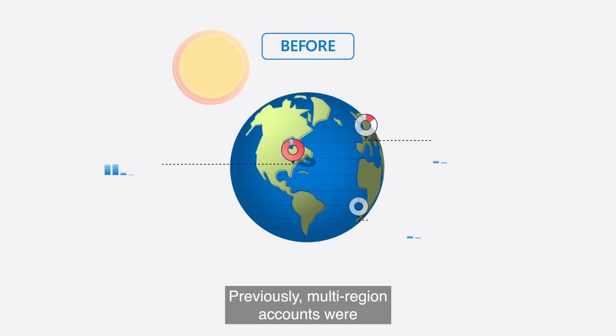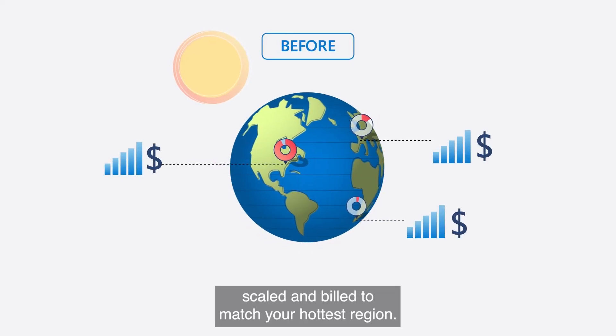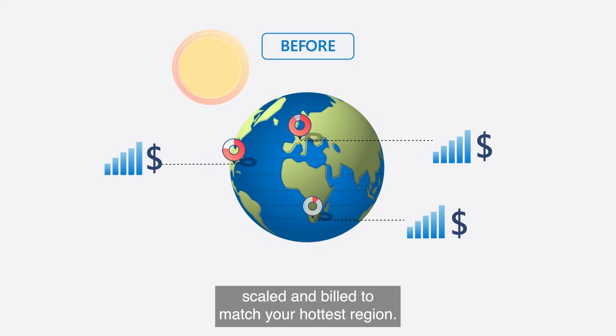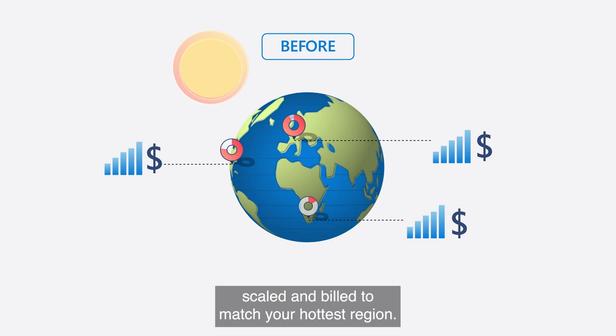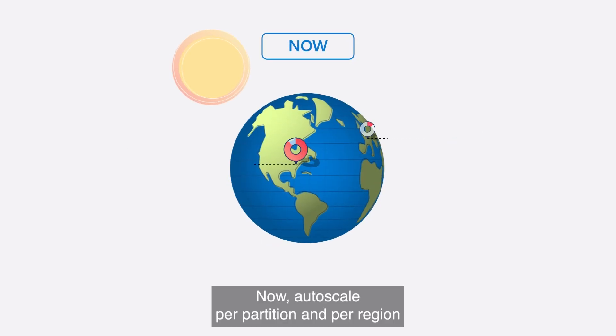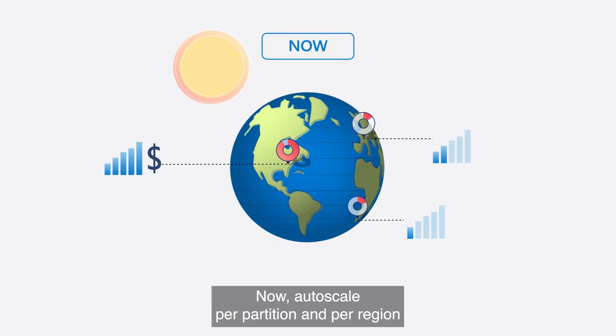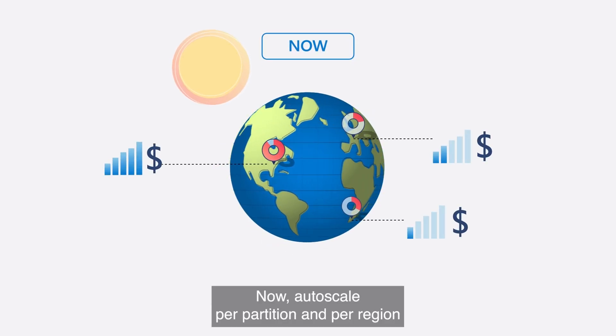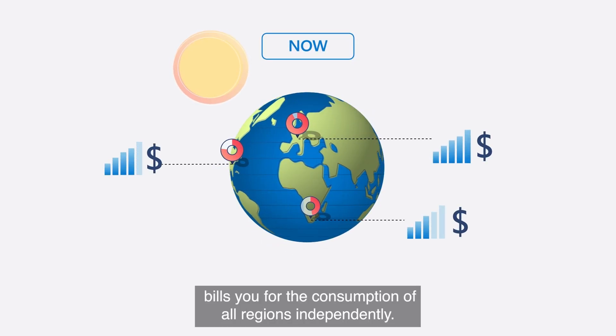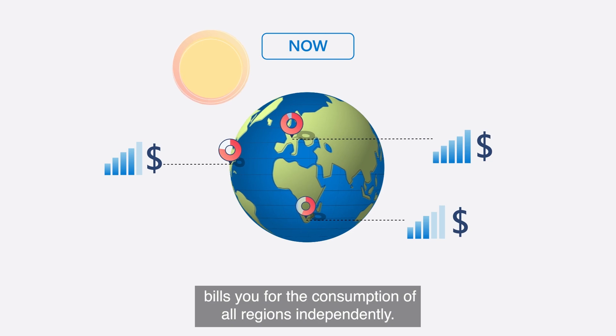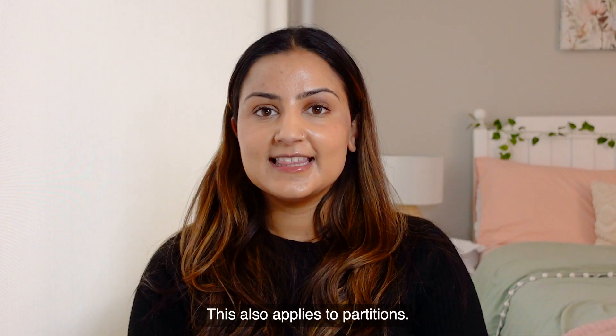Previously, multi-region accounts were billed based on your hottest region. Now, Autoscale per partition and per region bills you for the consumption of all regions independently.